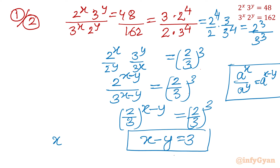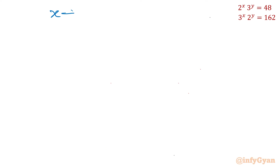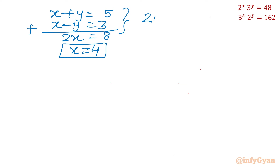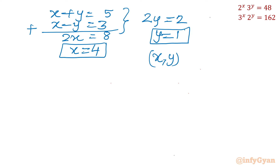Now let's solve for x and y using the two equations: x plus y equal to 5, and x minus y equal to 3. Adding both equations gives 2x equal to 8, so x equal to 4. Subtracting gives 2y equal to 2, so y equal to 1. Our solution is x, y equal to (4, 1).